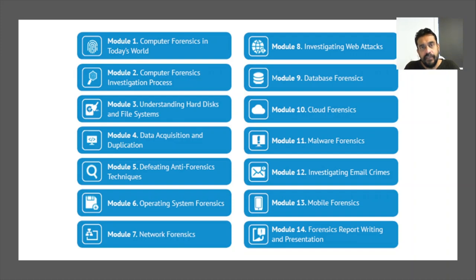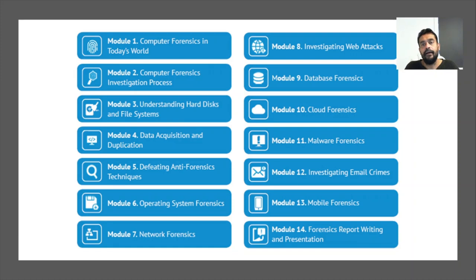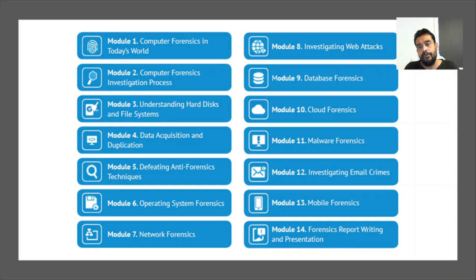Module 7 is network forensics — what information we can collect through a network, how to preserve it, and how to use it as evidence in court. Module 8 covers investigating web attacks: after a web attack occurs, what files and evidence we can collect from any web server — Apache, IIS, Nginx, or others. Module 9 is database forensics, covering what evidence we can collect and how when an incident involves a database.